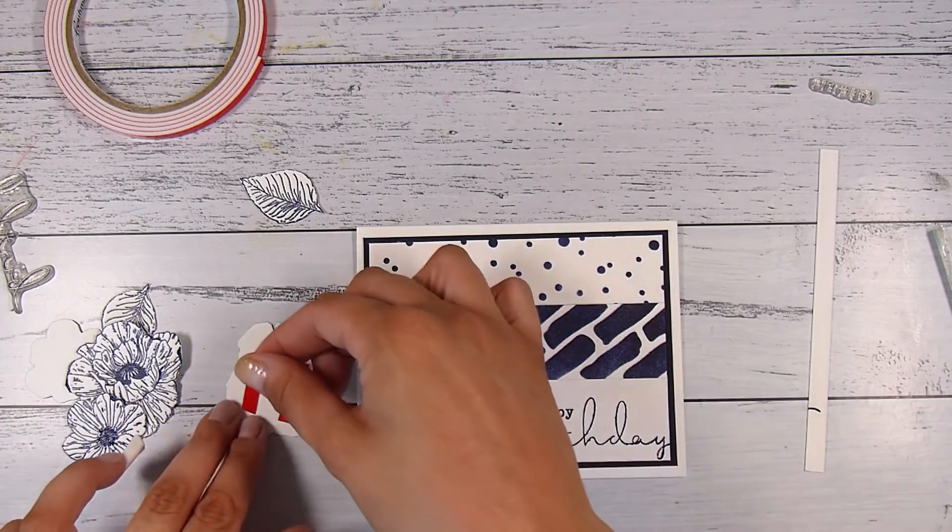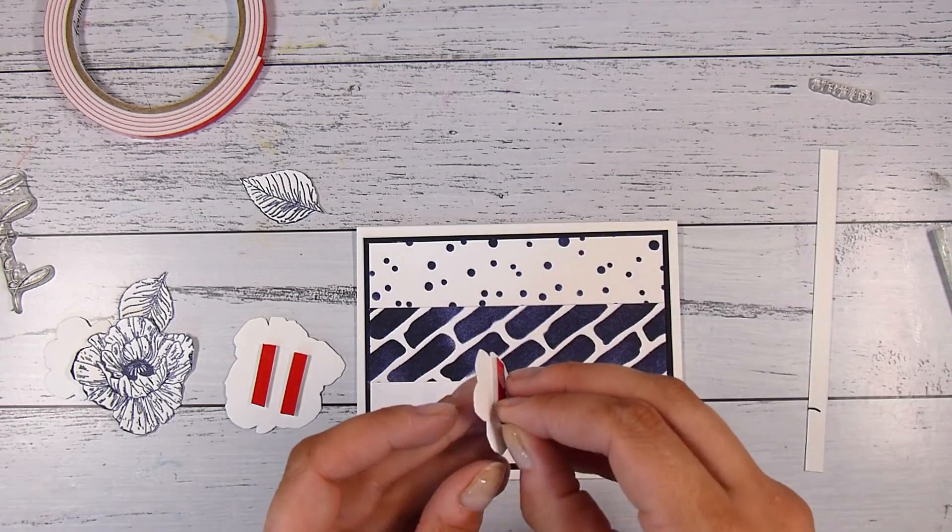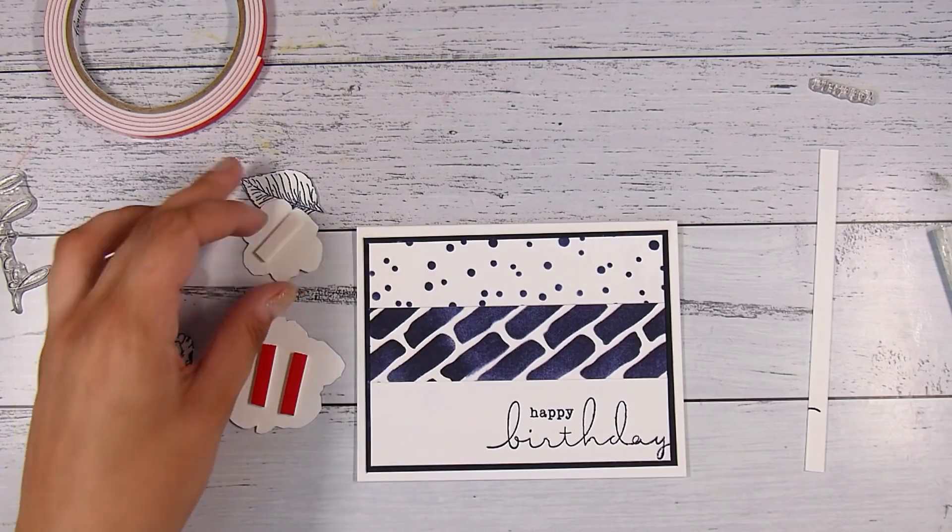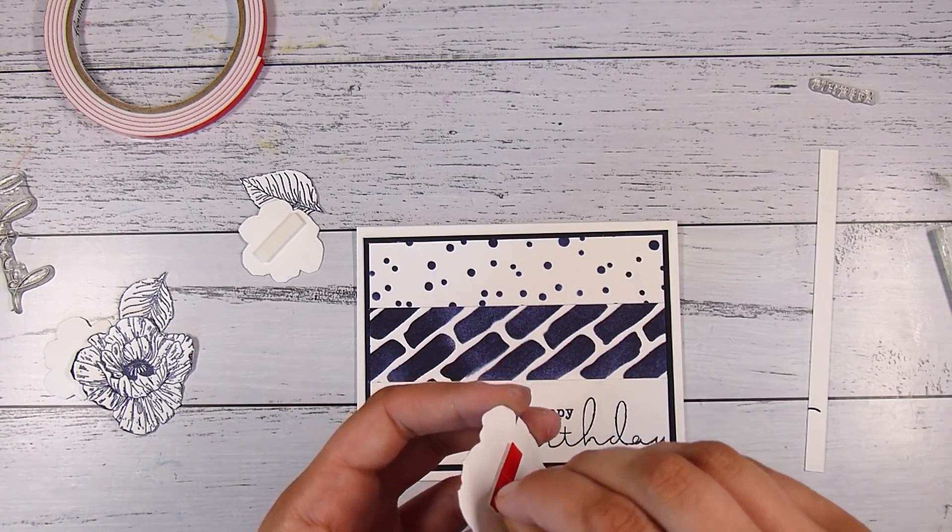I'm going to add a little bit of foam tape on the back of two of the flowers - on the small one and one of the large ones. Then one of them will sit nice and flat.